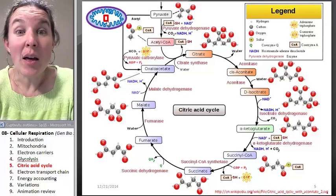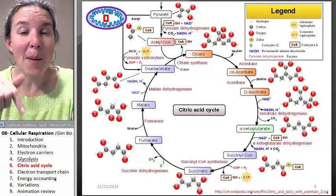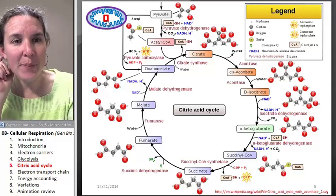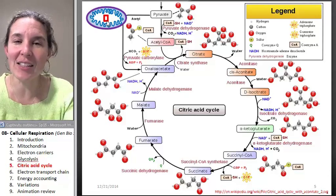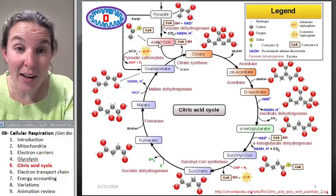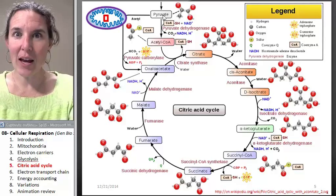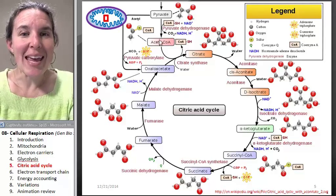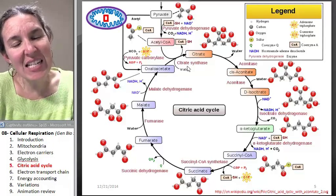And the citric acid cycle happens inside my mitochondria. So now we've got acetyl-CoA. Take a look. Here's acetyl-CoA. It came from pyruvate exactly like we know. It's going to feed into this cycle